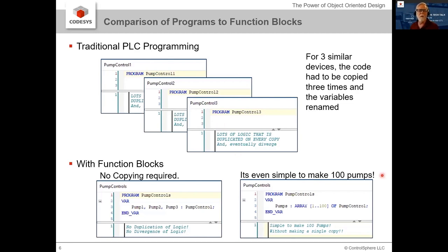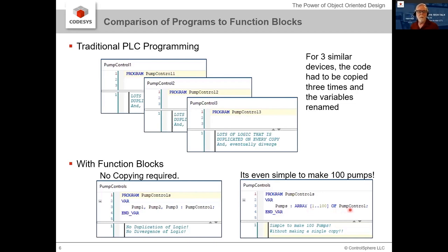With function blocks, we just put our programming into a function block, take all those global variables and put them inside the function block itself. Then we can create three instances — pump one, pump two, pump three of type pump control — just like declaring three instances of an integer. No copying global variables, no renaming, no naming convention, no copying programs, no having code in multiple places. If we want 100 pumps, just put it into an array of 100 pumps and you're done.